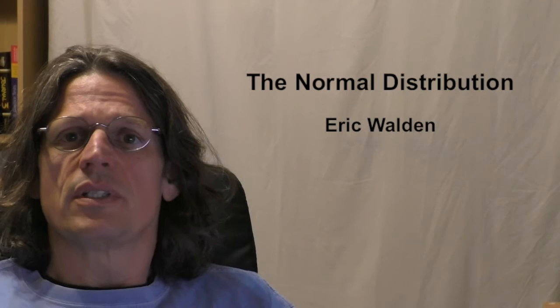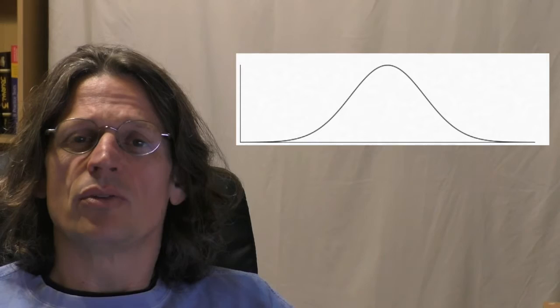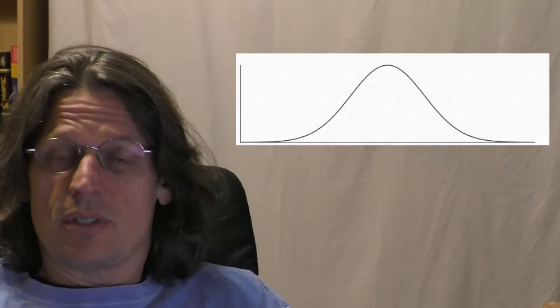Hello. Today we're going to talk about the normal distribution. It's an important distribution for statistics. We'll talk about why later, but right now I just want to show you a picture of the distribution. It looks like this — it's a nice bell-shaped curve. It's kind of peaky and then it goes out.